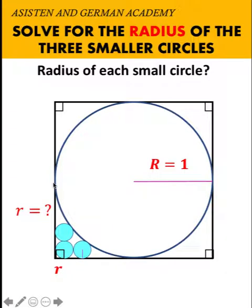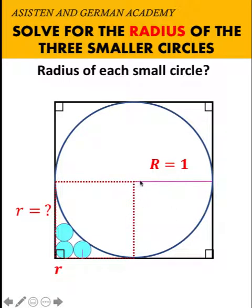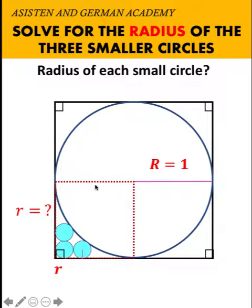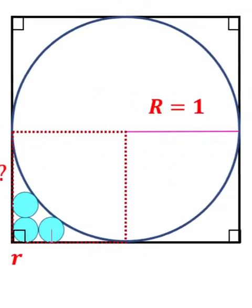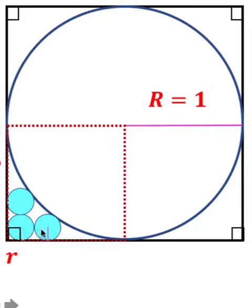Let's solve this problem together. Let's begin by extending this radius to become a diameter. The measure of this diameter must be two units because the radius is one unit. This other radius is perpendicular to the diameter, and so we form a smaller square with a side length of one unit, because its side length is the length of the radius. Now let's look at the two smaller circles at the bottom.